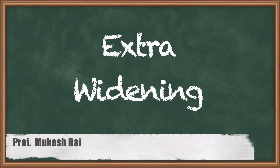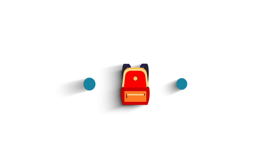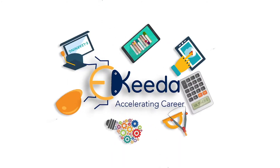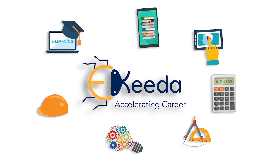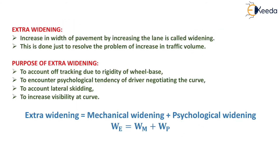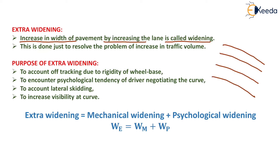Hello students, today we are going to study extra widening. Extra widening is defined as the increase in width of pavement by increasing the lane width. Here we increase the width of the lane by increasing the number of lanes, and this is called extra widening.